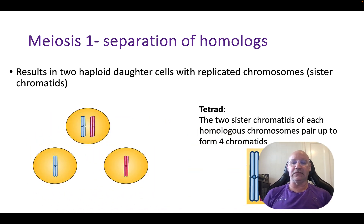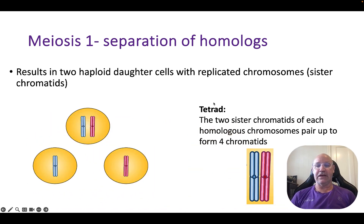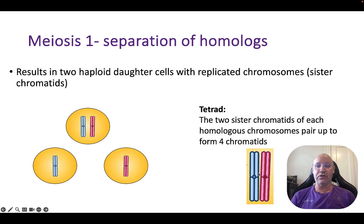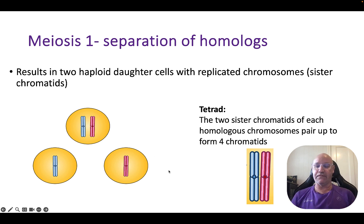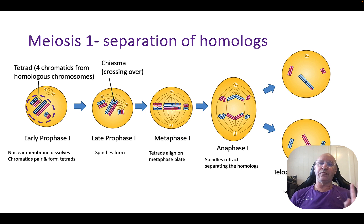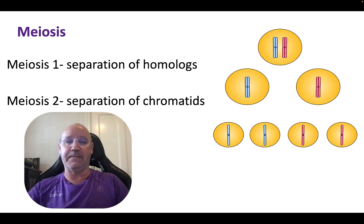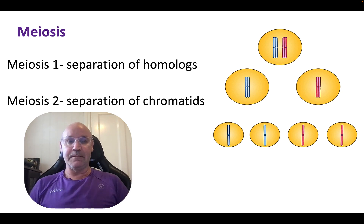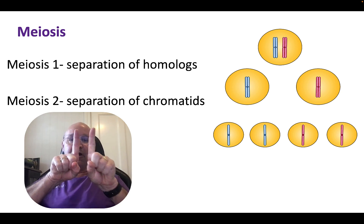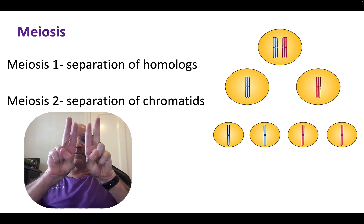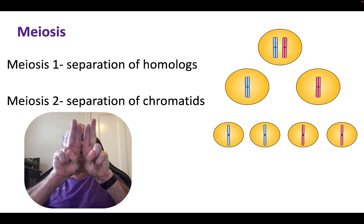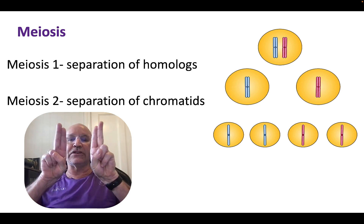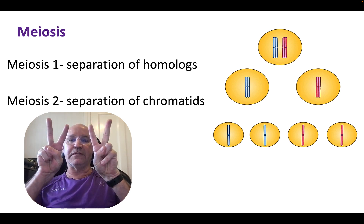The two sister chromatids align with each other, forming four chromatids together — which we call a tetrad. Then meiosis one is the separation of the homologues. Using your fingers is really helpful here: we've got our homologues, then DNA replication giving sister chromatids, then meiosis one separating the homologues, and meiosis two separating the chromatids.